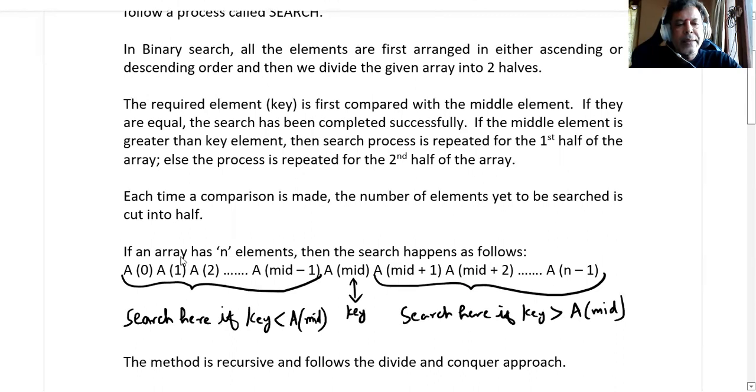Let's say the array has n elements, then we can express the elements as A(0), A(1), A(2), and so on, A(mid), and so on, A(n-1). So totally there will be n elements. If the middle value is equal to the key value, the search is over.